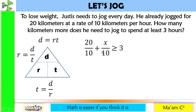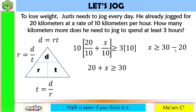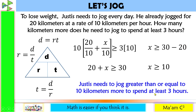Multiplying both sides by 10: 20 + x ≥ 30. Moving 20 to the other side: x ≥ 10. So Justice needs to jog greater than or equal to 10 kilometers more to spend at least 3 hours of jogging.